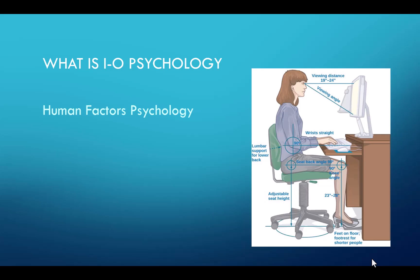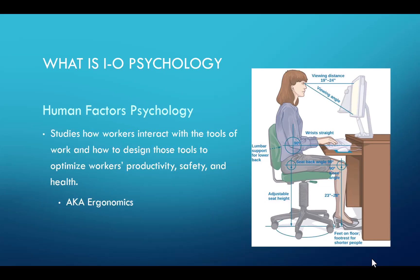Human factors psychology is a branch of IO psychology, and it looks at how workers interact with the tools they use, trying to design things to optimize those tools for productivity, safety, and health — in other words, looking at the ergonomics of the workplace. These tools can include interactions with machines, your workstation like sitting at a desk, information displays, and the local environment, like what's the best type of lighting. Places like Silicon Valley have all sorts of non-traditional workplace environments to try to increase productivity, and it's IO psychologists and human factors psychology bringing those changes.